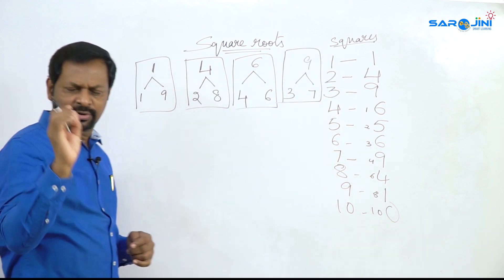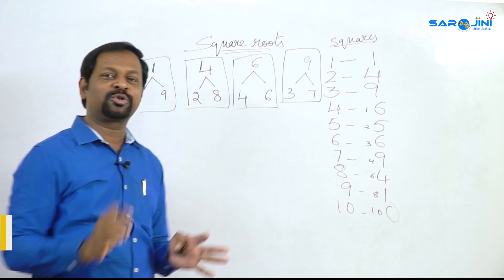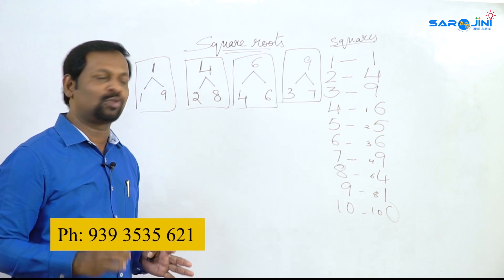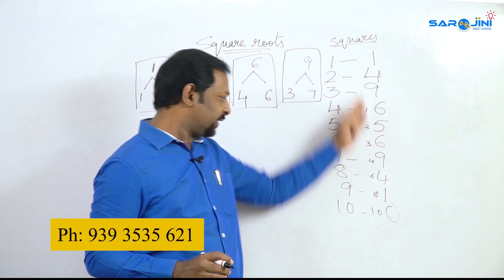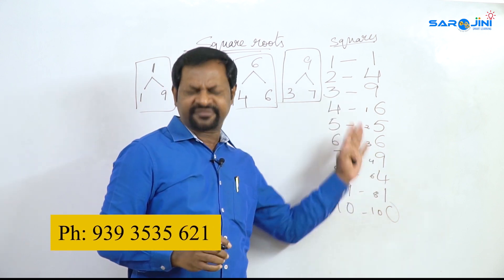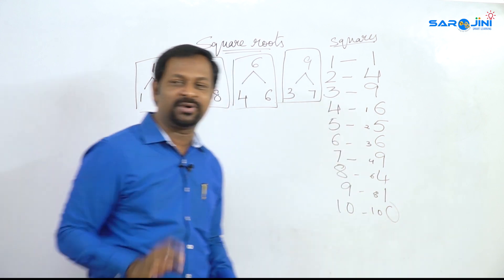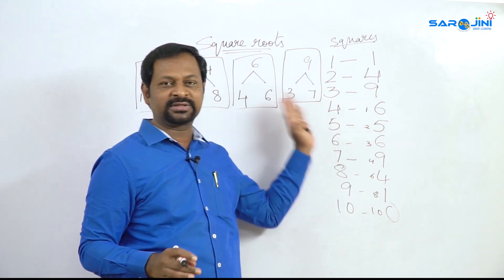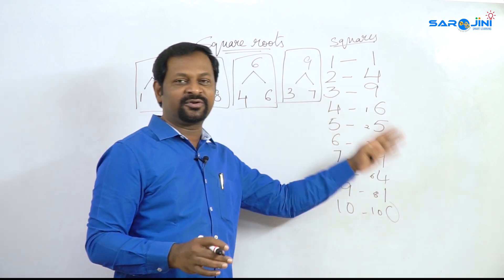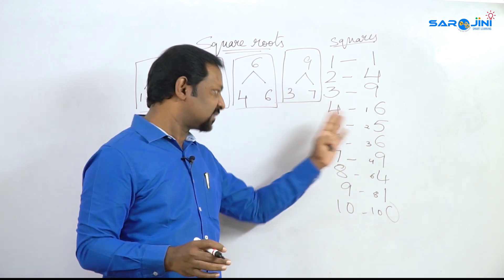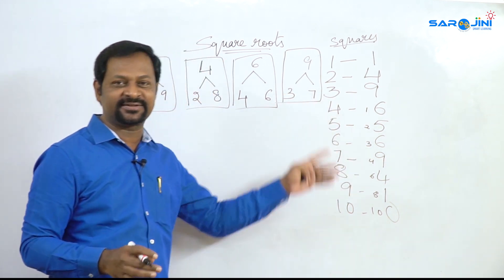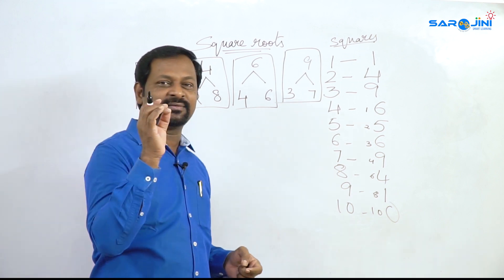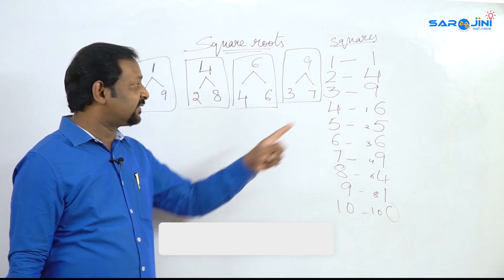From 1 to 10, note the squares: 1 squared is 1, 2 squared is 4, 3 squared is 9, 4 squared is 16, 5 squared is 25, 6 squared is 36, 7 squared is 49, 8 squared is 64, 9 squared is 81, 10 squared is 100.